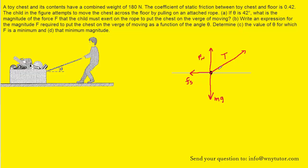For the tension, we're going to have to break it up into its x and y components, and so it might be helpful to first draw in those components. We have the x component pointing to the right, which we can label tx, and then we have the y component pointing straight up, which we can label ty.